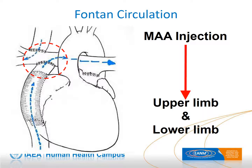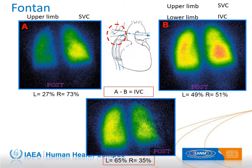The Fontan circulation, used in complex malformations, provides lung perfusion directly from the superior vena cava and inferior vena cava to the pulmonary arteries. The flux from the two anastomoses is asymmetric: from the superior vena cava it enters mostly the right pulmonary artery, and from the inferior vena cava it enters mostly the left pulmonary artery. Two injections are required — upper limb and lower limb. After arm injection, image A demonstrates preferential flow to the right lung. After leg injection, image B shows symmetric distribution, and image C is the subtraction image demonstrating preferential flow from the inferior vena cava to the left lung.